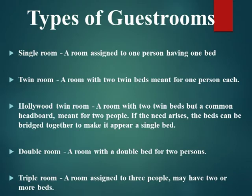Types of Guest Rooms. Single room: a room assigned to one person having one bed. Twin room: a room with two twin beds meant for one person each. Hollywood twin room: a room with two twin beds but a common headboard, meant for two people. If the need arises, the beds can be bridged together to make it appear a single bed. Double room: a room with a double bed for two persons. Triple room: a room assigned to three people, may have two or more beds.